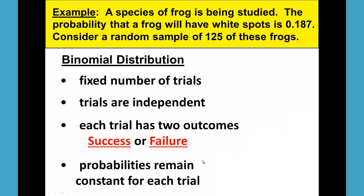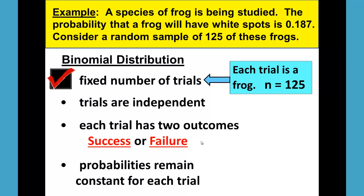First, we must determine if it is a binomial. Is there a fixed number of trials? Each trial is a frog. N equals 125. Yes.